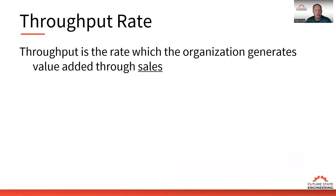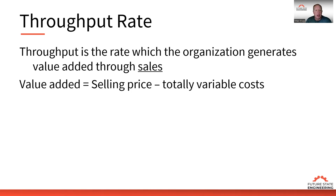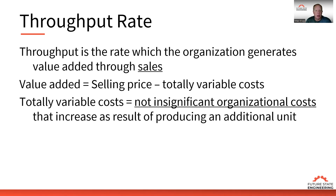First of all, let's review what throughput rate is. Throughput rate is the rate at which the organization generates value added through sales — it's not by putting stuff into inventory, it's getting it out the door and into sales. In a non-constrained market, the constraint is either internal to the organization or upstream in the supply chain. Throughput is the value added, which is the selling price minus the totally variable costs.